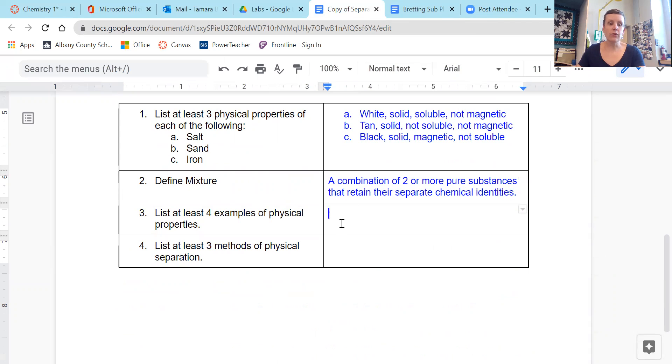List at least four examples of physical properties that can be used, or sorry, physical properties done, and list at least three methods of physical separation. So again, use your introduction, figure those out, and we will see you in the next video if you are working from home. Talk to you guys later.